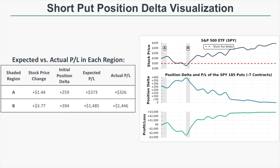Any differences can be attributed to the fact that delta changes as the stock price changes, so the initial position delta is actually shifting as the stock moves. Additionally, the passage of time can lead to profits from the decay of the options, and any changes in implied volatility will also translate to profits and losses. So direction is not the only factor, but as we can see, position delta was very accurate in predicting the expected profit and loss in each movement.